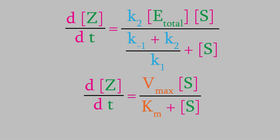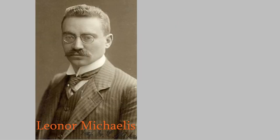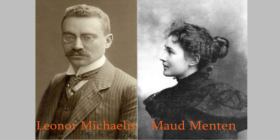This final equation is one of the most important equations in all of biochemistry, and it's called the Michaelis-Menten equation. The number Km is called the Michaelis-Menten constant. They're named after the German biochemist Leonor Michaelis and his collaborator, the Canadian biochemist Maud Menten.